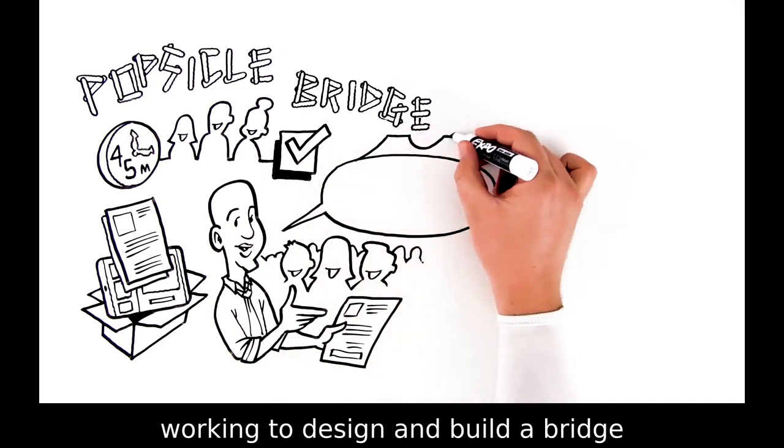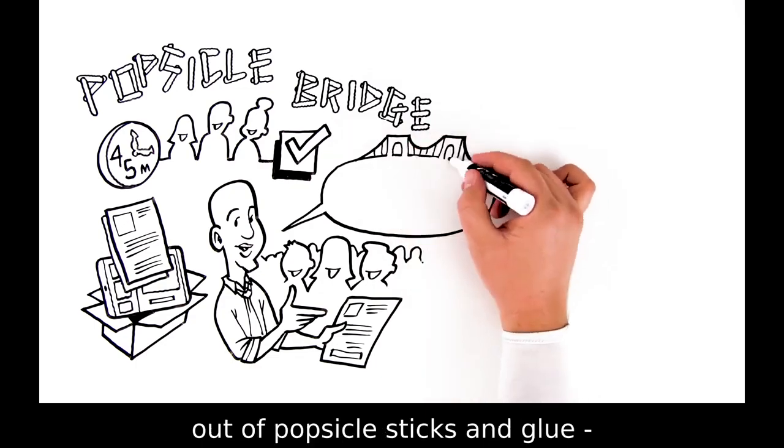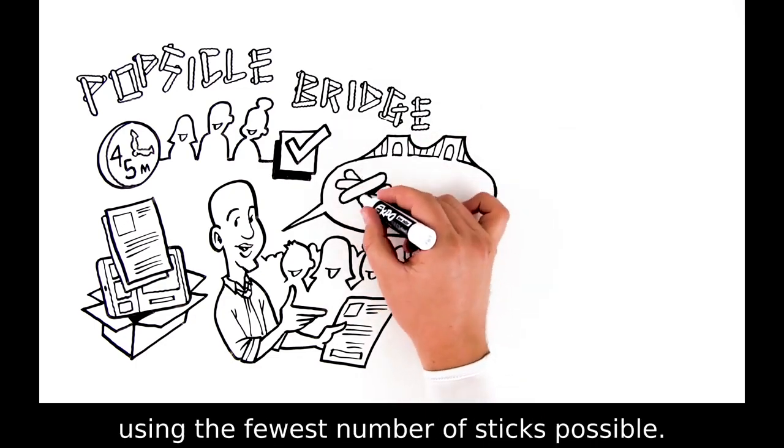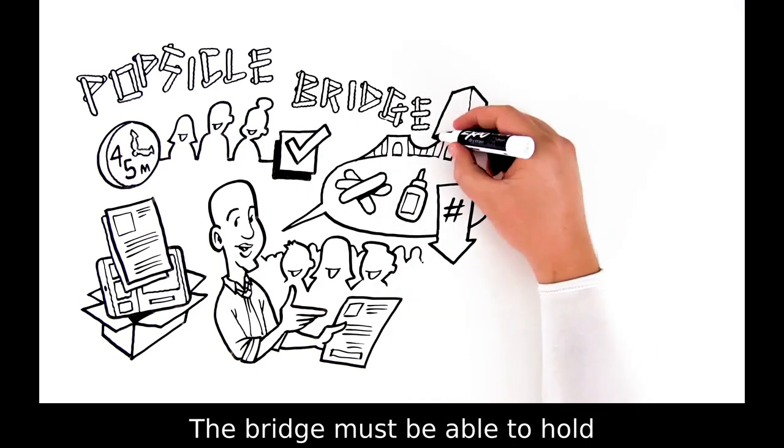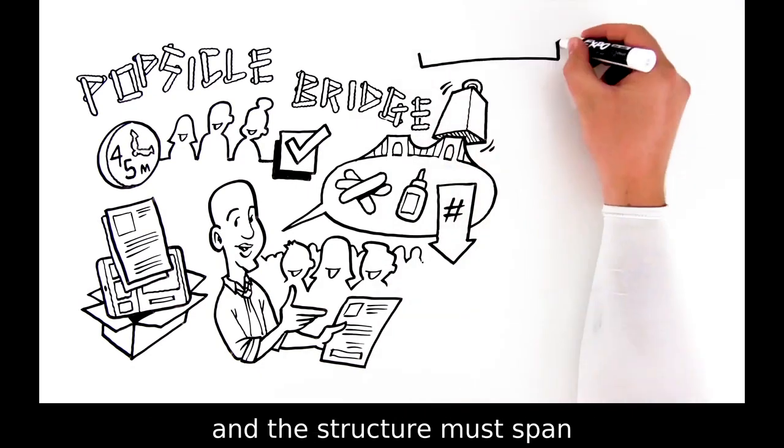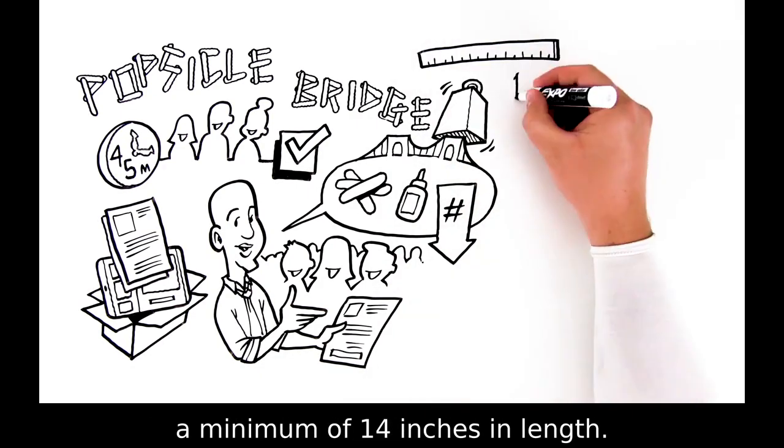You're a team of engineers working to design and build a bridge out of popsicle sticks and glue, using the fewest number of sticks possible. The bridge must be able to hold a predetermined weight and the structure must span a minimum of 14 inches in length.